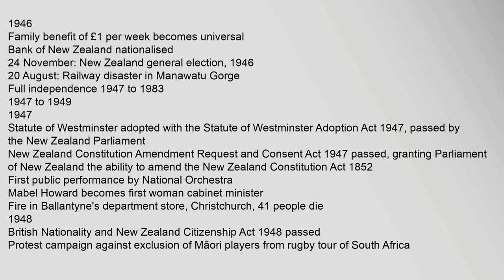1948: British Nationality and New Zealand Citizenship Act 1948 passed. Protest campaign against exclusion of Maori players from rugby tour of South Africa. Polio epidemic closes schools. Mount Ruapehu and Mount Ngauruhoe erupt. Meat rationing ends. 1949, 1 January: New Zealanders become British subjects and New Zealand citizens. Referendum agrees to compulsory military training. New Zealand gets first four Navy frigates. 30 November: General election — National government elected. 1950s: 1950: Naval and ground forces sent to Korean War. New Zealand Legislative Council abolished. Wool boom. 1951: Prolonged waterfront dispute; state of emergency proclaimed. ANZUS Treaty signed between United States, Australia and New Zealand. Maori Women's Welfare League established.